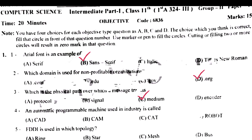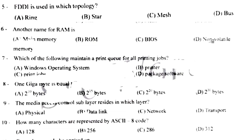An automatic programmable machine used in industries is called a robot. FDDI is used in which topology? Ring topology. Another name for RAM is main memory. Which of the following maintains a print queue for all printing jobs? Print shop.